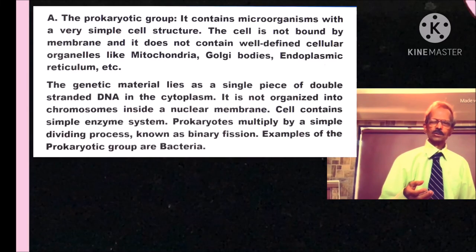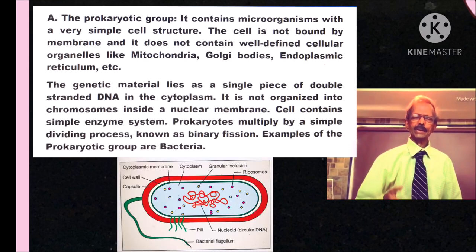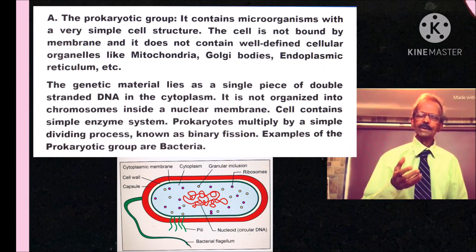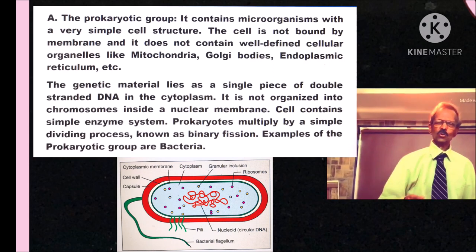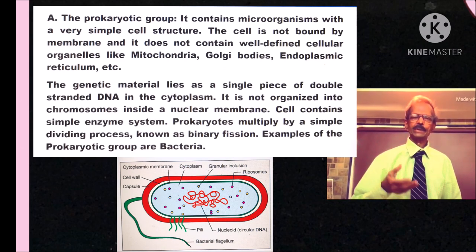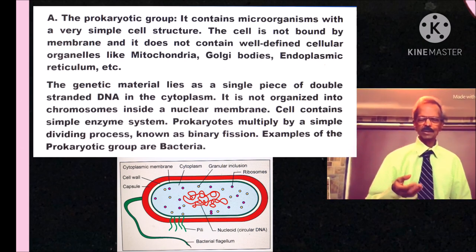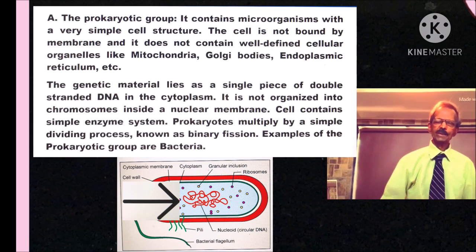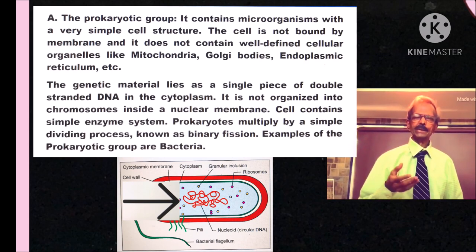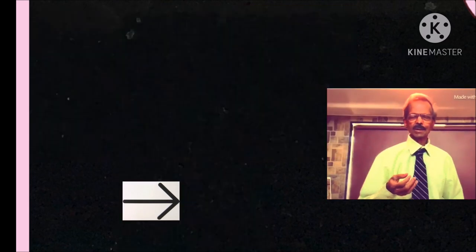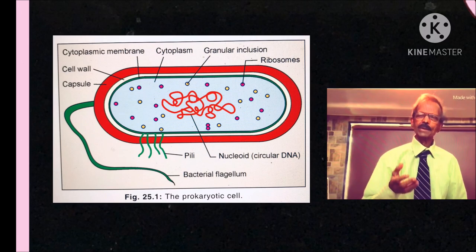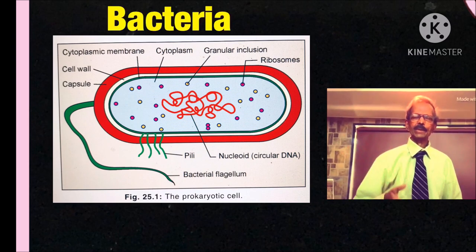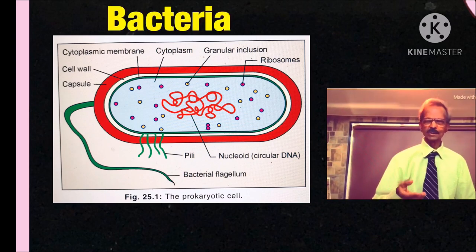The prokaryotic group contains microorganisms with a very simple cell structure. The cell is not bound by a membrane and it does not contain certain well-defined cellular organelles like mitochondria, Golgi bodies, endoplasmic reticulum, etc. The genetic material lies as a single piece of double-stranded DNA in the cytoplasm. It is not organized into chromosomes inside a nuclear membrane. The cell contains simple enzyme systems. Prokaryotes multiply by a simple dividing process known as binary fission, and examples of the prokaryotic group are bacteria.